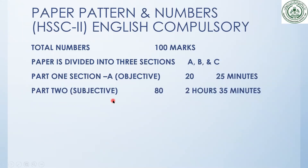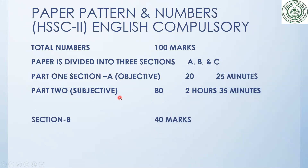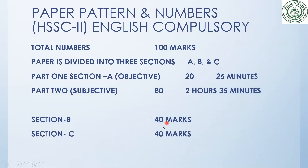Part two is the subjective section with 80 marks and 2 hours 35 minutes to complete it. So the total time is 3 hours: 2 hours 35 minutes for the subjective and 25 minutes for the objective. The subjective part is divided into Section B and Section C, each containing 40 marks — totalling 80 marks for subjective and 20 for objective, giving 100 marks overall.